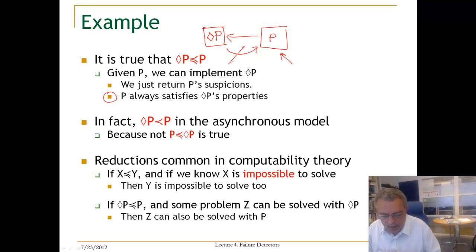So now let us look to what reducibility is good for. Reducibility is common in computability theory, and if we know that X can be implemented using Y, for example, and we know that X is impossible, then we also know that Y is impossible to solve.